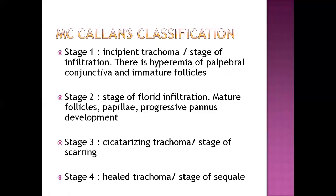According to MacKallan's classification, there are various stages. Stage 1 is incipient trachoma with hyperemia — excess blood supply. Stage 2 is infiltration — entry of microorganisms. Stage 3 is cicatrizing trachoma, where friction has started. Stage 4 is healed trachoma, where tissue debris moves outside and trachoma heals. Healing is only possible with proper prevention and treatment at stages 1 and 2.